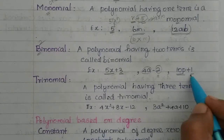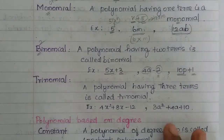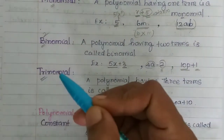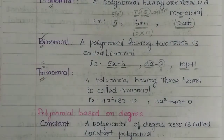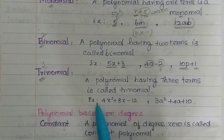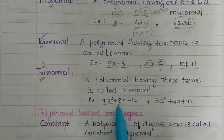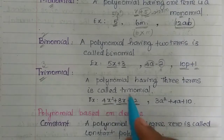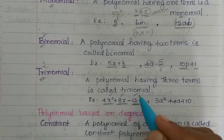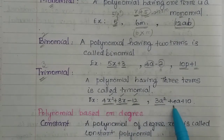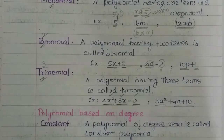A polynomial having three terms is called a trinomial. For example, 4x squared plus 8x minus 12 — there are three terms. Also, 3a squared plus 4a plus 10 has three terms. So it is a trinomial.